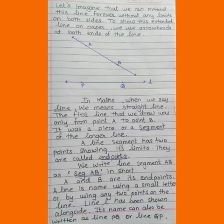The first line that we drew was only from point A to point B. It was a piece or a segment of the longer line. A line segment has two points showing its limits. They are called end points.